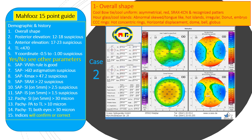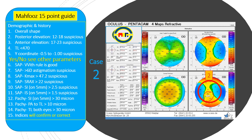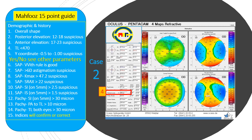Number two: posterior elevation in the center is 12 microns, which is right at the start of the suspicious range. Number three: anterior elevation is all less than 17 microns, so that is in the normal range. Number four: thinnest location is 468, just less than 470, so that is in a suspicious range. Number five: the y-coordinate is minus 0.48, very close to minus 0.5. Out of the first five, the overall shape, posterior elevation, thinnest location, and y-coordinate are suspicious — so perhaps it's not a normal cornea.